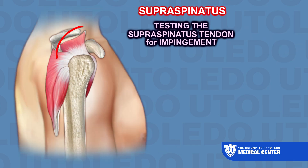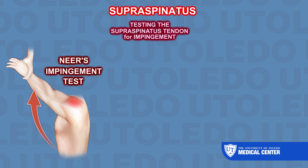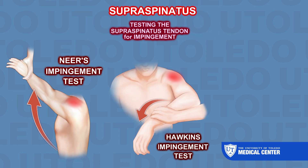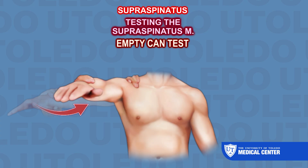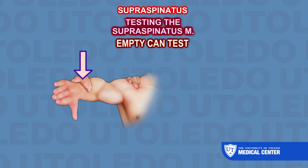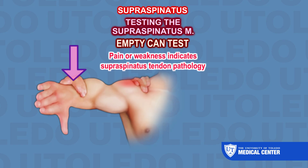Testing the supraspinatus tendon for impingement involves several physical exam maneuvers, such as the Neer's impingement test and the Hawkins impingement test, that involve passively moving the arm to compress the tendons and reproduce pain if impingement is present. Another common test is the empty-can test, which assesses strength and pain during specific movements. Pain or weakness indicates supraspinatus tendon pathology.